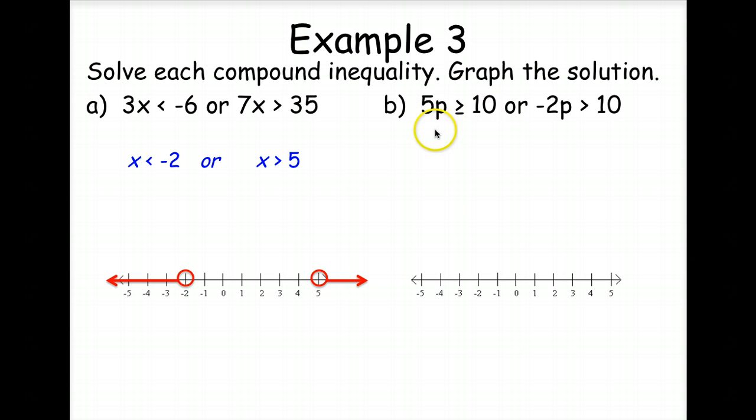Here we're going to divide both sides by 5 and negative 2. What happens when we divide by a negative? We flip the inequality symbol. So we've got P is greater than or equal to 2, and P is less than negative 5. Very good.